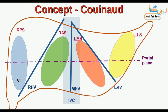The right posterior sector is divided into segments 6 and 7 by the portal plane. Similarly, the right anterior sector is divided into segments 5 and 8, so the right lobe has segments 5, 6, 7, and 8. The right anterior and right posterior sectors are separated by the right hepatic vein, and the segments are separated by the portal plane. The left medial segment has segments 4a and 4b, and the left lateral sector has segments 2 and 3.